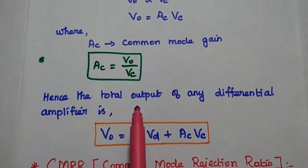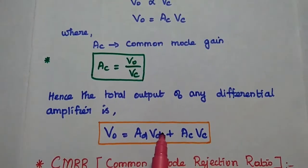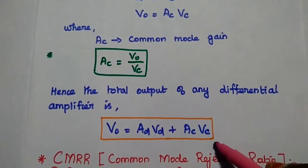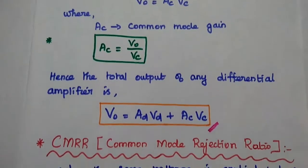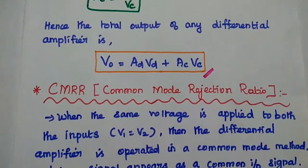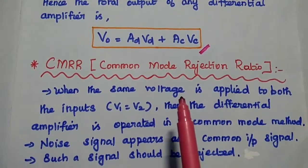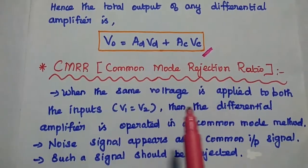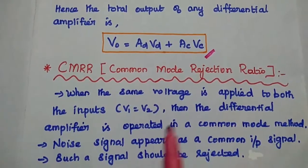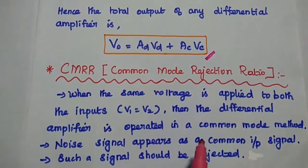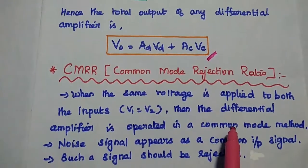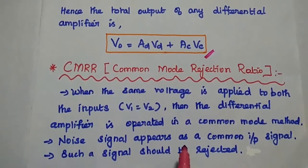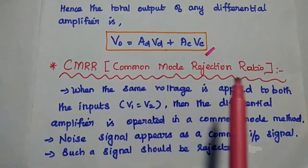The total output of any differential amplifier is the sum of the differential mode and common mode components: V0 = AD·VD + AC·VC. The next very important parameter is the common mode rejection ratio. In case of a common mode signal, both the inputs are equal. Sometimes, noise signals can appear as a common input signal. In such cases, we have to eliminate or reject the common mode signal. That is called the common mode rejection ratio.